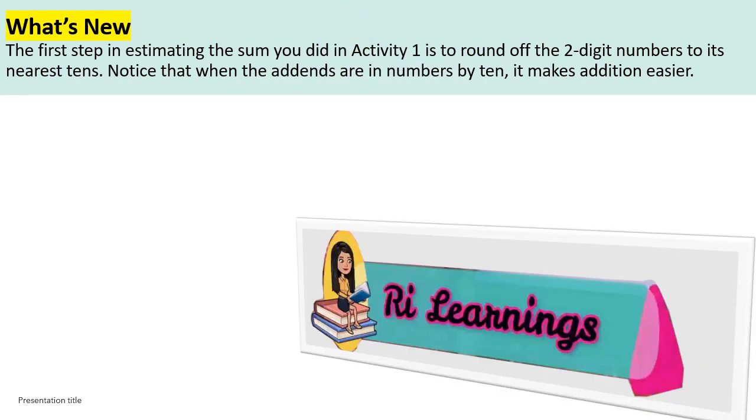What's new? The first step in estimating the sum you did in activity 1 is to round off the two-digit numbers to its nearest tens. Notice that when the addends are in numbers by 10, it makes addition easier.